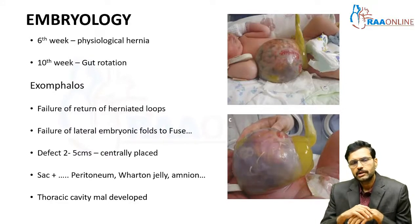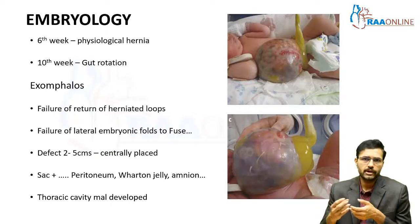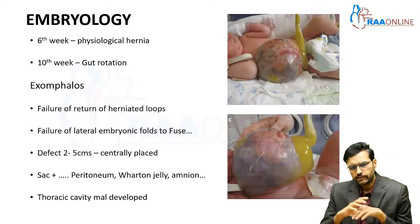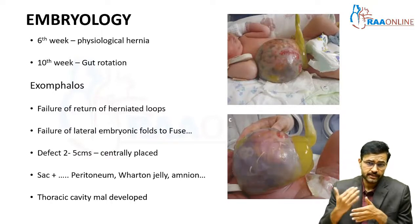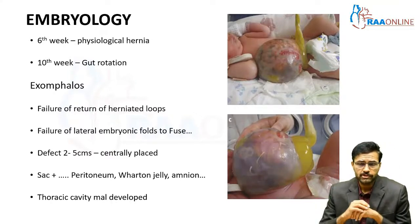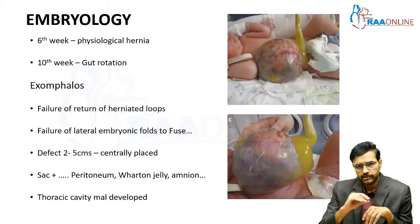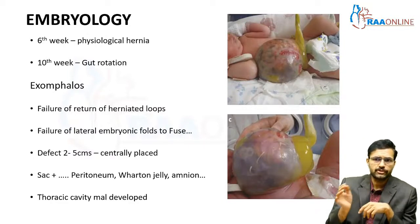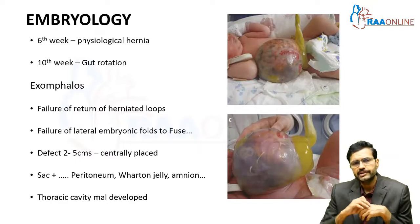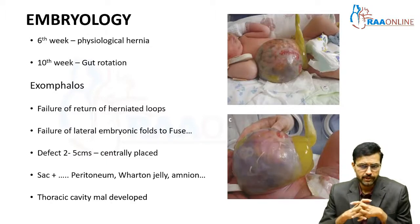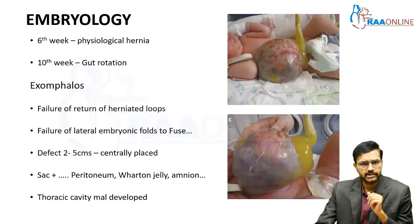In exomphalos, there is failure of lateral embryonic fold fusion resulting in failure of return of the herniated bowel loops. The defect is usually around two to five centimeters, centrally placed, and the bulge is covered by a sac with three layers: a peritoneal layer abutting the bulge, a Wharton's jelly layer, and an amnion on the outside. A large exomphalos, called exomphalos major, is associated with thoracic cavity maldevelopment, basically resulting in lung hypoplastic changes.